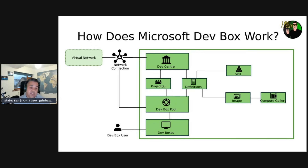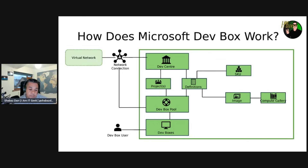You can create one or more projects in a dev center. A dev box definition specifies the configuration of the dev boxes, such as the virtual machine image and compute resources. You can choose a VM image from the Azure Marketplace or use an Azure Compute Gallery for custom VM images. Projects contain a collection of dev box pools — a dev box pool specifies configuration such as the dev box definition, the network connection, and other settings. All dev boxes created from a dev box pool share the same configuration. The network connection determines where the dev box is hosted.